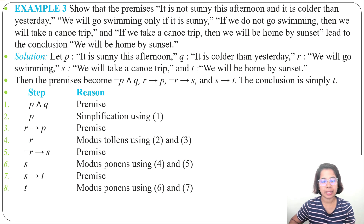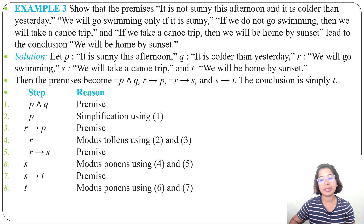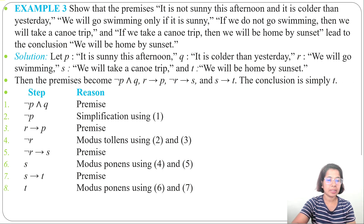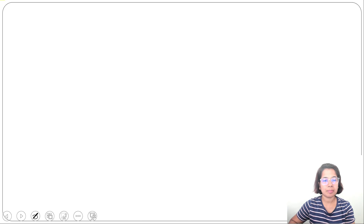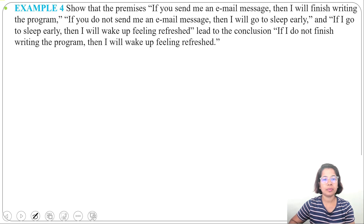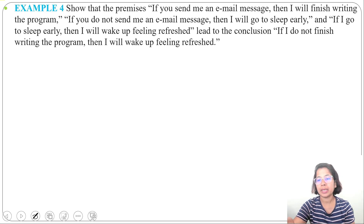From these premises we conclude that T is true — meaning 'we will be home by sunset.' You could also prove this by truth table, but with five variables there would be 2⁵ = 32 rows. Here, in just eight steps, we proved T is true. Now let's look at another example — Example 4.